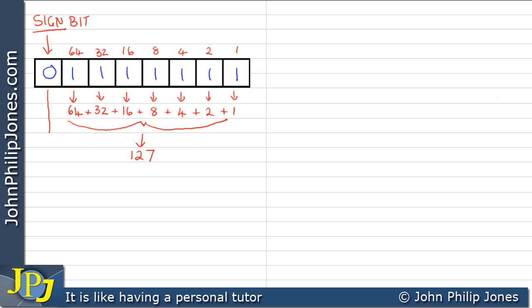Now this is a signed bit, and that is 0, so it means positive. So we end up with plus 127. The biggest positive number possible for an 8-bit binary number is positive 127.